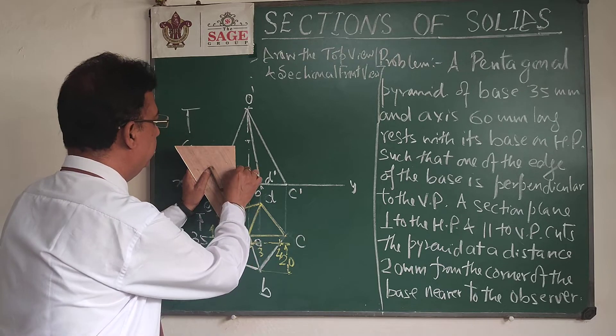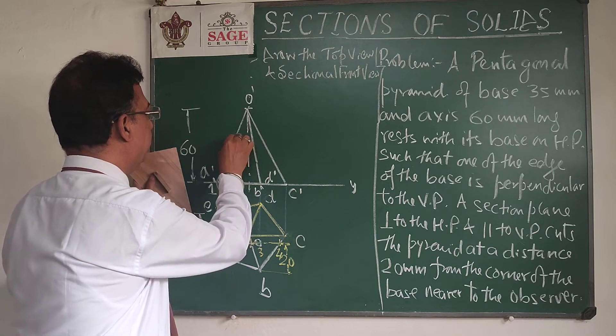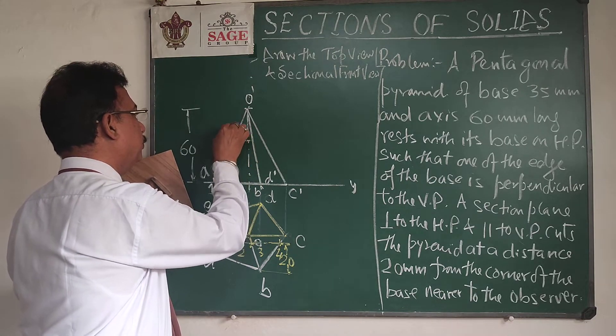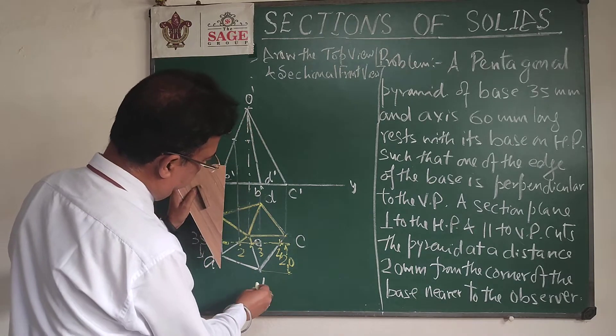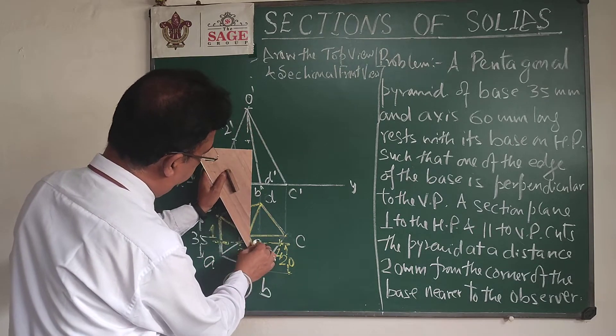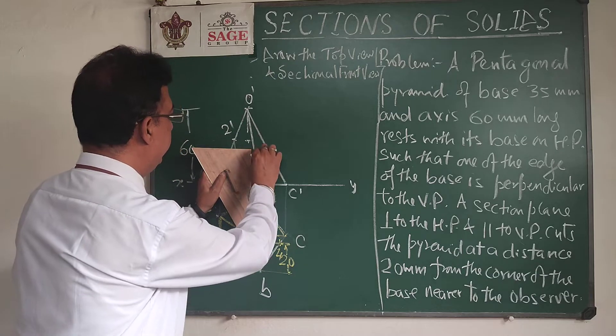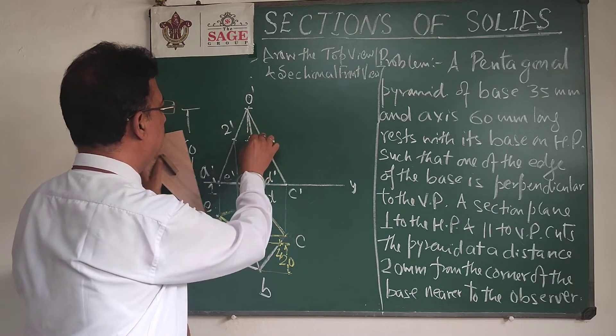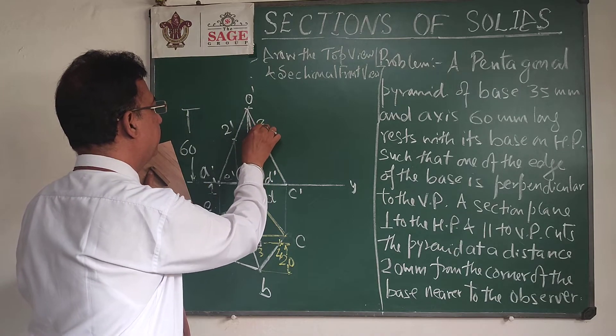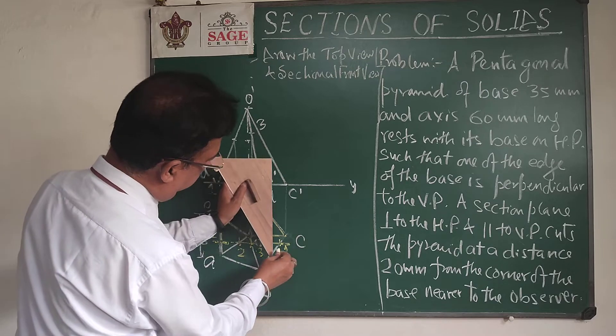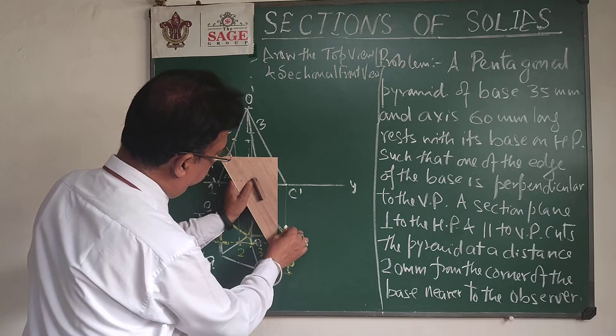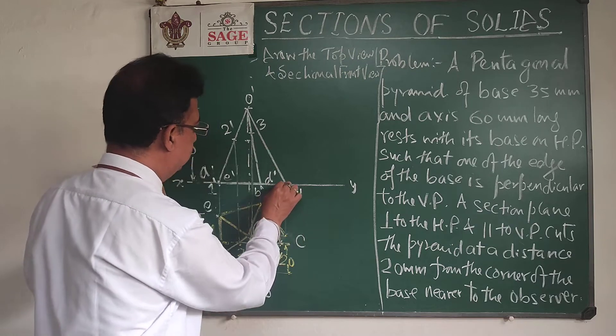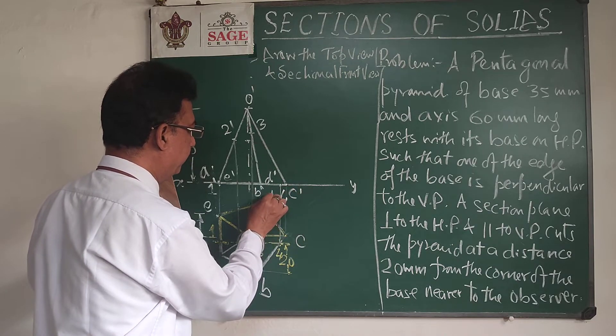So go upside, the intersection will be the point 2 dash. 3 will be on the line OB, so go upside. This point will be 3 and finally the 4 that will be on the base, so that will be point 4.